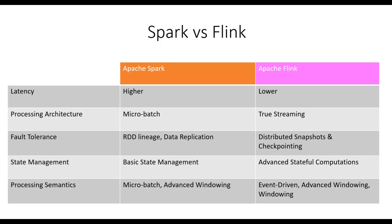Fault tolerance is crucial in stream processing frameworks. Spark achieves fault tolerance through RDD lineage and data replication, which can lead to higher overhead. In contrast, Flink adopts a distributed snapshot and checkpointing mechanism, providing efficient and reliable fault tolerance. Flink's approach ensures data integrity and fault recovery, making it a robust choice for handling failures in real-time stream processing.